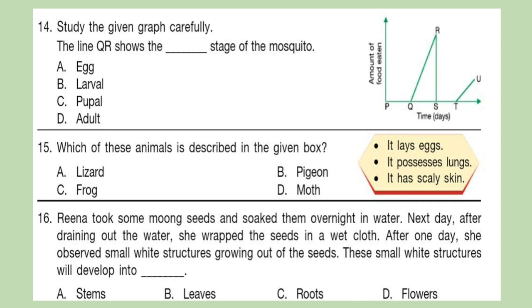Question 14: Study the given graph carefully. The line QR shows the death stage of the mosquito. Question 15: Which of these animals is described in the given box? It lays eggs, it possesses lungs, it has scaly skin. Question 16: Reena took some moong seeds and soaked them overnight in water. Next day after draining out the water she wrapped the seeds in a wet cloth. After one day she observed small white structures growing out of the seeds. These small white structures will develop into blank.